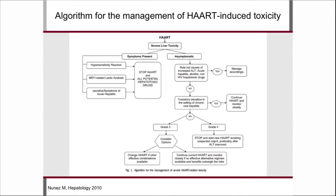Marina Nunez also suggests an algorithm for managing HIV drug toxicity. When a patient has symptoms — signs of hypersensitivity such as rash, fever, eosinophilia, or signs of lactic acidosis or jaundice — you should stop all potentially hepatotoxic drugs. When the patient is asymptomatic, rule out underlying liver disease. If not present and the patient has grade 3 ALT elevations, you should either change or closely monitor. If grade 4 — more than 10 times the upper limit of normal — stop the ARVs and, if possible, wait until ALT improves before trying a new regimen.